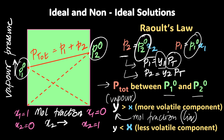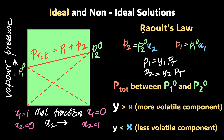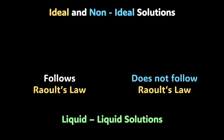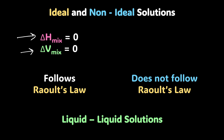A non-ideal solution is simply one that does not follow Raoult's law. When you mix two liquids, if no heat is evolved or needed, ΔH mixing = 0, and if the volume doesn't change, ΔV mixing = 0 — that's an ideal mixture. If either of these conditions is violated — heat released or required, or a change in volume — that leads to a non-ideal solution.